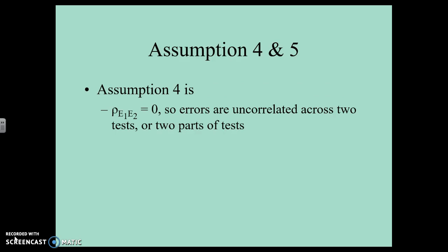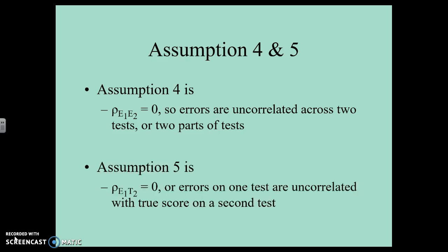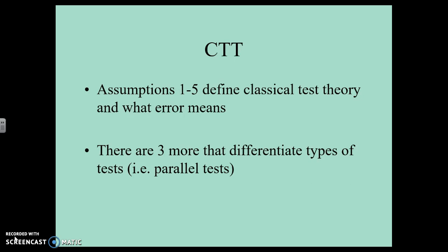Assumptions four and five: the errors are uncorrelated across two tests or two parts of a test, so the error on one test is not related to my error on another test. And the errors on one test are uncorrelated with the true scores on a second test — meaning my true score on a depression test is not influencing my errors on an anxiety test. In classical test theory with these five assumptions, my observed score is essentially equal to my true score, and while we recognize error is there, we don't really do anything with it — we assume it doesn't affect anything.